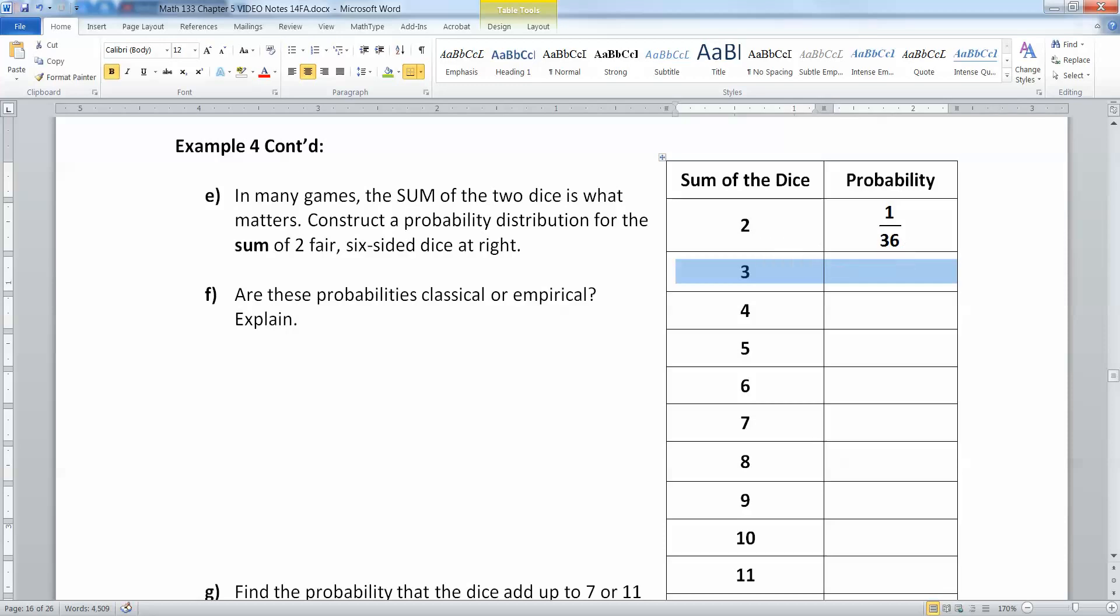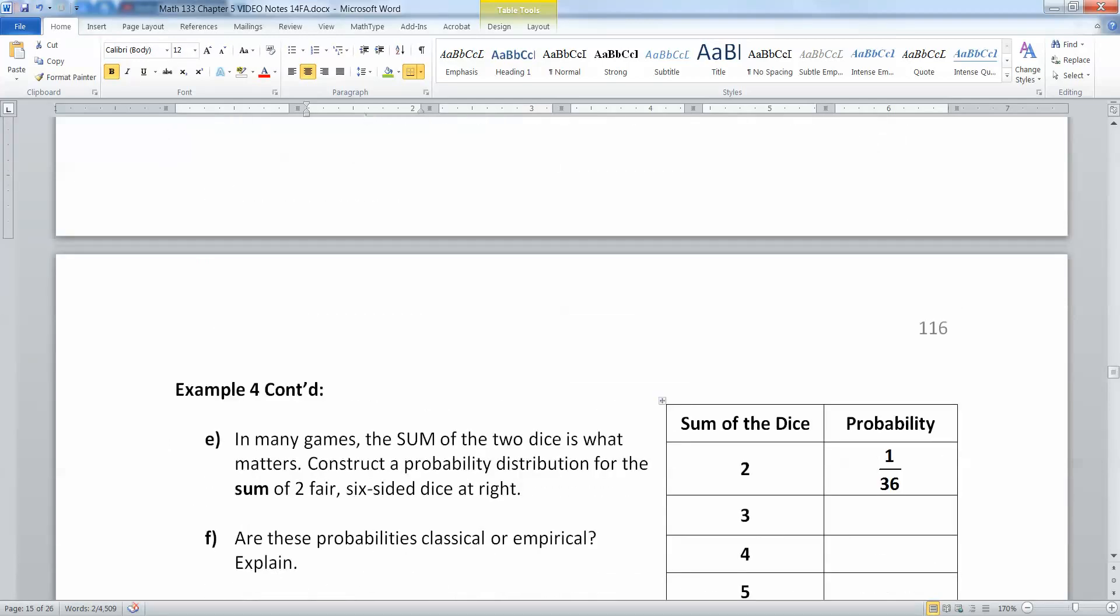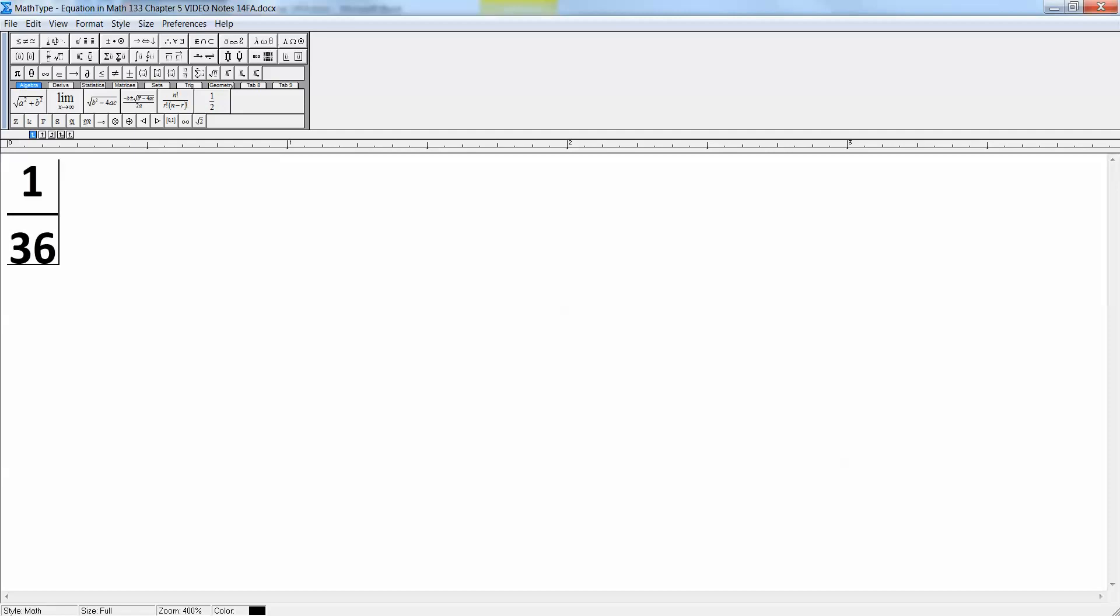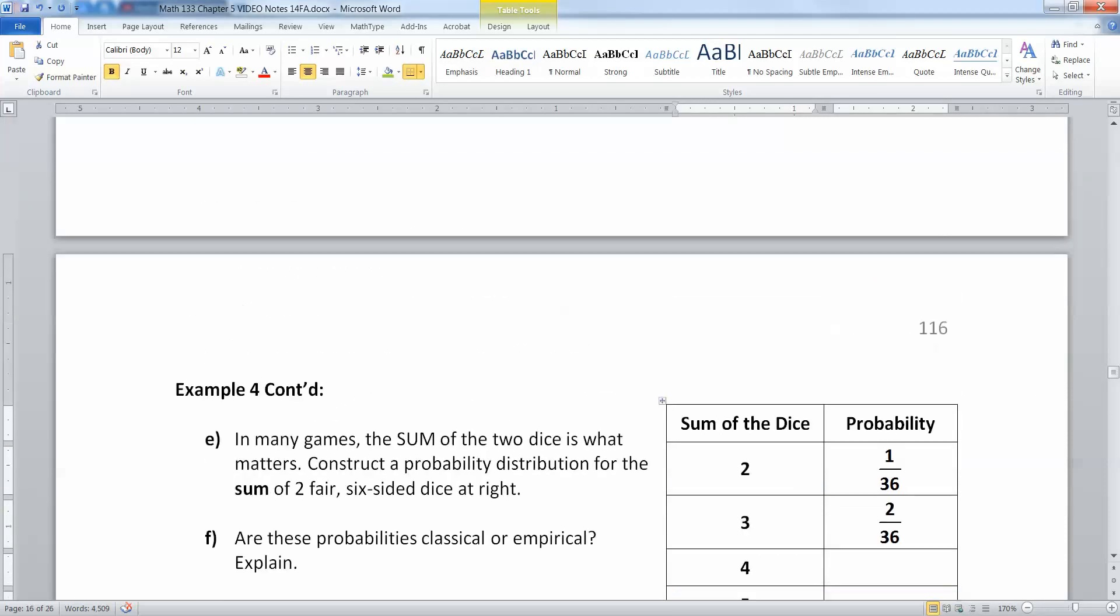What about summing to three? Summing to three happens here at two and one or here at one and two. That's it. There are no other numbers that add up to three. So that would be two out of 36. And you can see how this is going to progress.